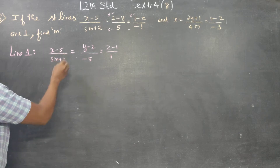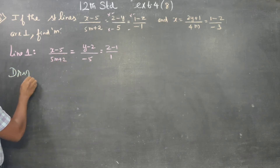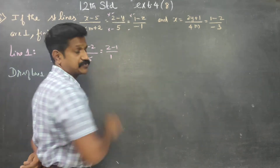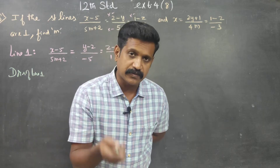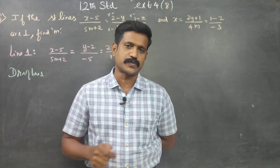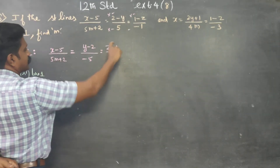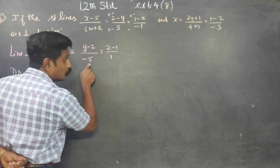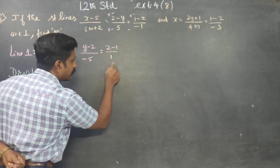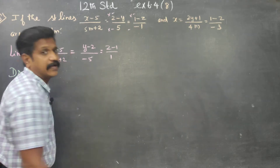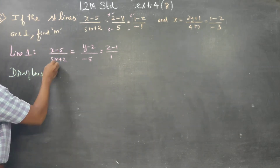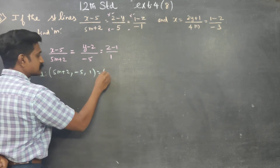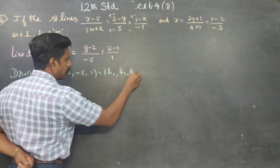I want the direction ratios of line 1. The denominator represents direction ratios. The equation of a straight line is x minus x1 by b1, y minus y1 by b2, z minus z1 by b3, where b1, b2, b3 are direction ratios. So the direction ratios of line 1 are: 5m plus 2, minus 5, and 1. This is my b1, b2, b3.